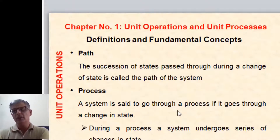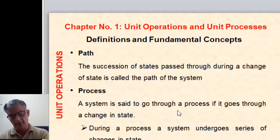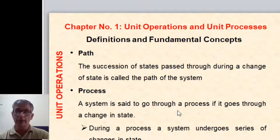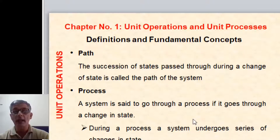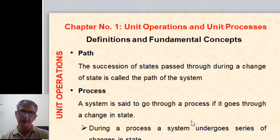Next is path: the succession of states passed through during a change of state is called the path of the system. Next is process: a system is said to go through a process if it goes through a change of state. Whenever there is a change in any property, we can say there is a change of state and a process is going to occur. During a process, a system undergoes a series of changes in state.